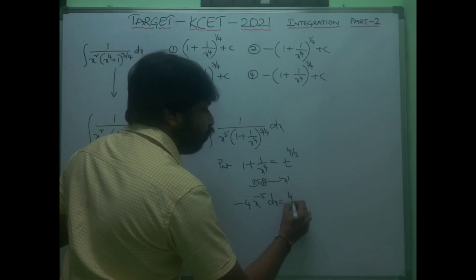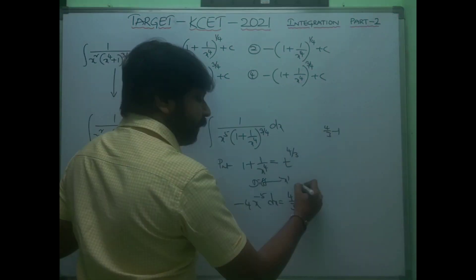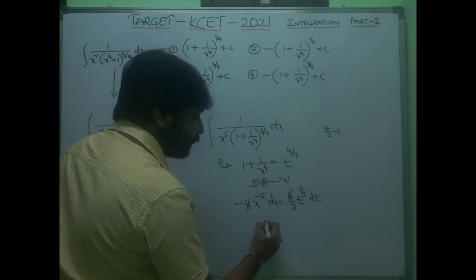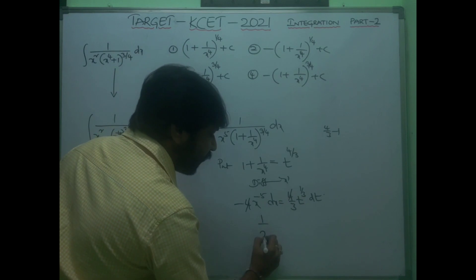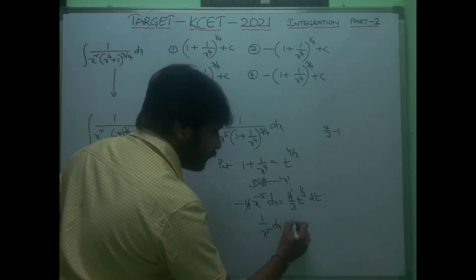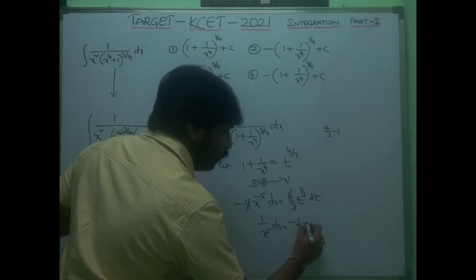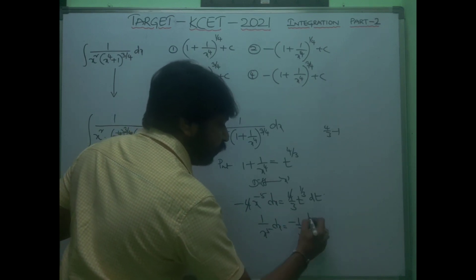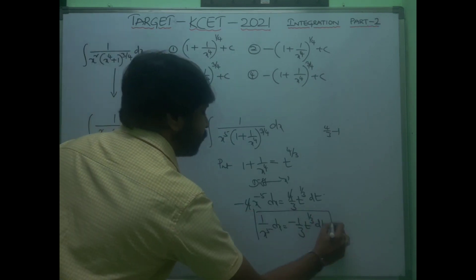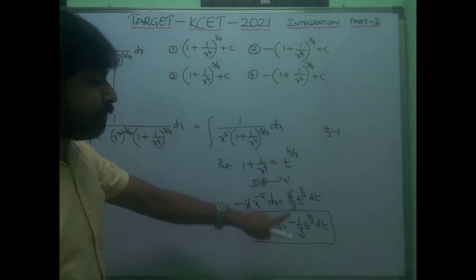The 4's cancel, and 1/x^5 dx equals −(1/3)·t^(−1/3)·t^(1/3) dt. Substituting back, the integral becomes ∫ −(1/3) · t^(1/3) / t^(4/3··3/4) dt. After simplifying powers: t^(1/3)·t^(−1) = t^(−2/3), so you get −(1/3)∫t^(−2/3) dt.